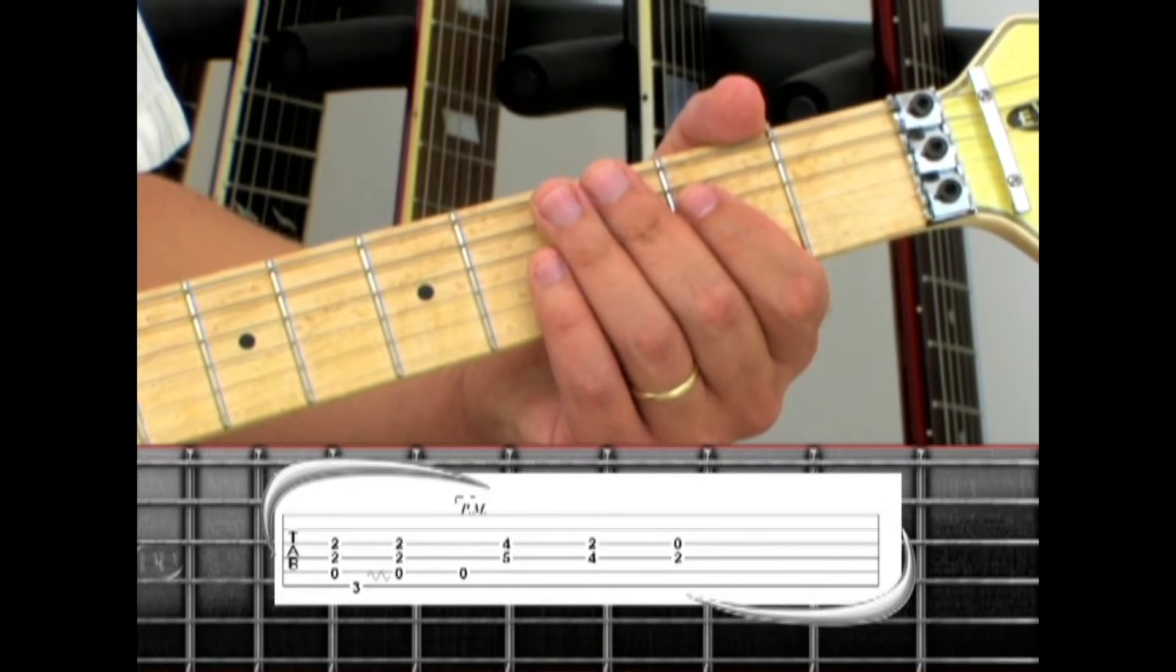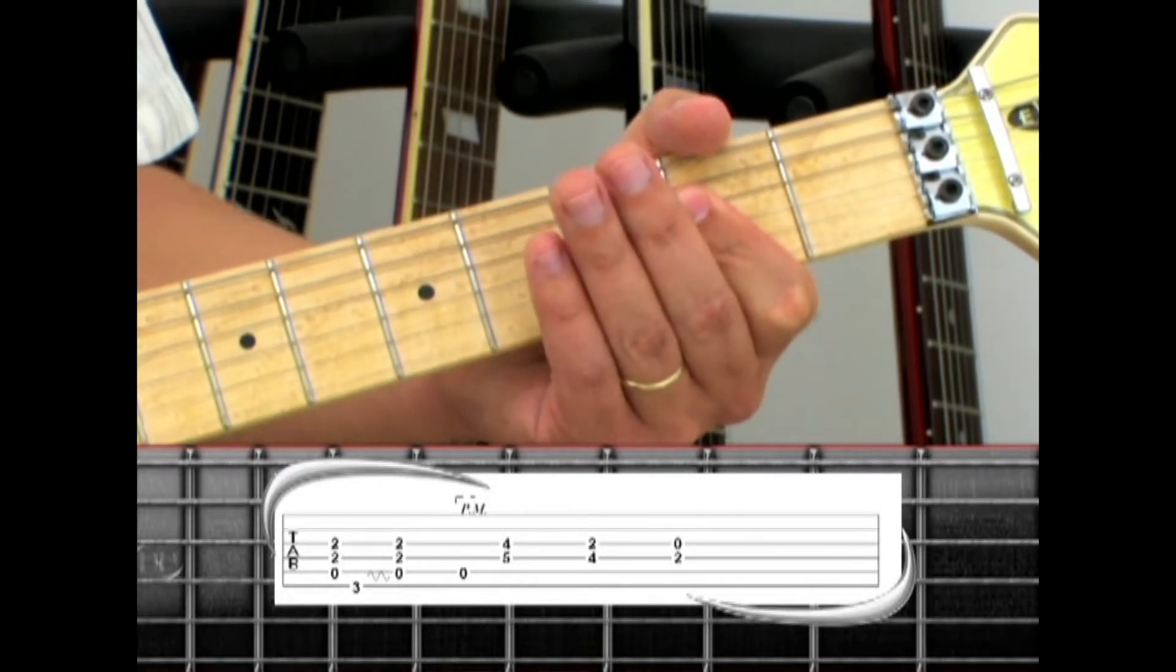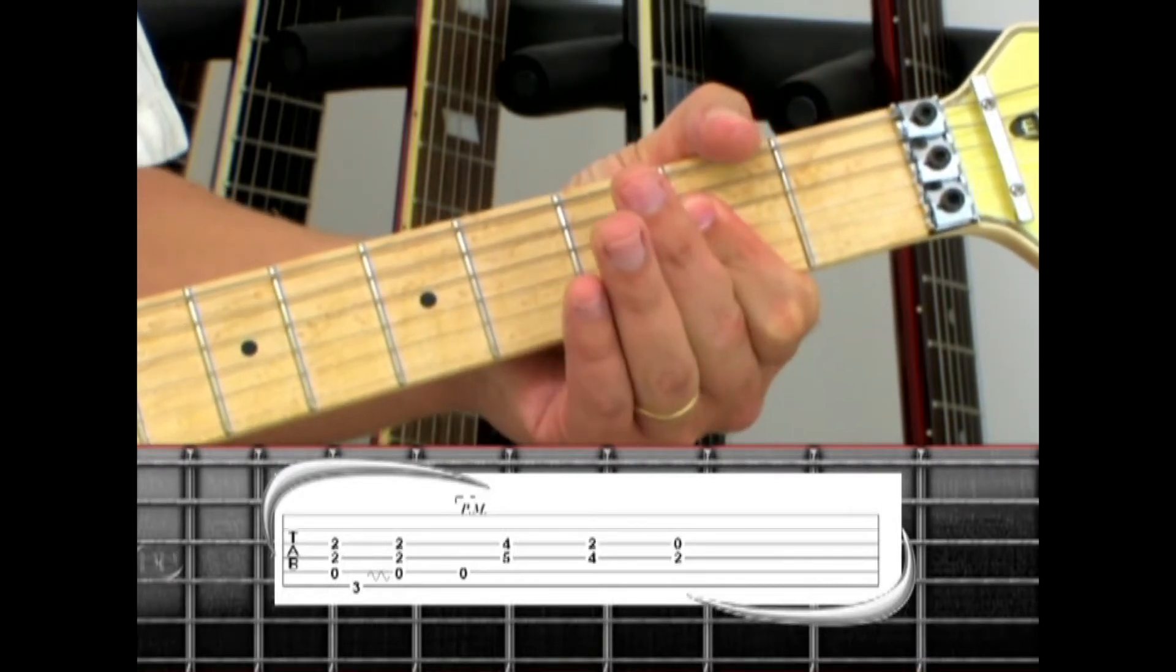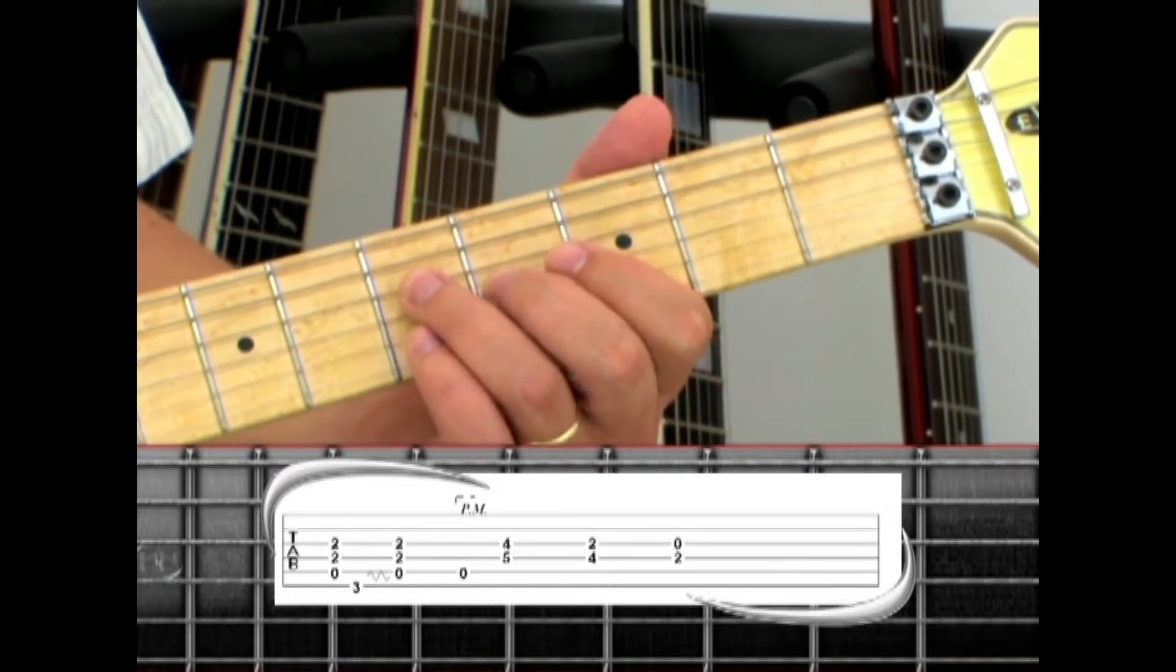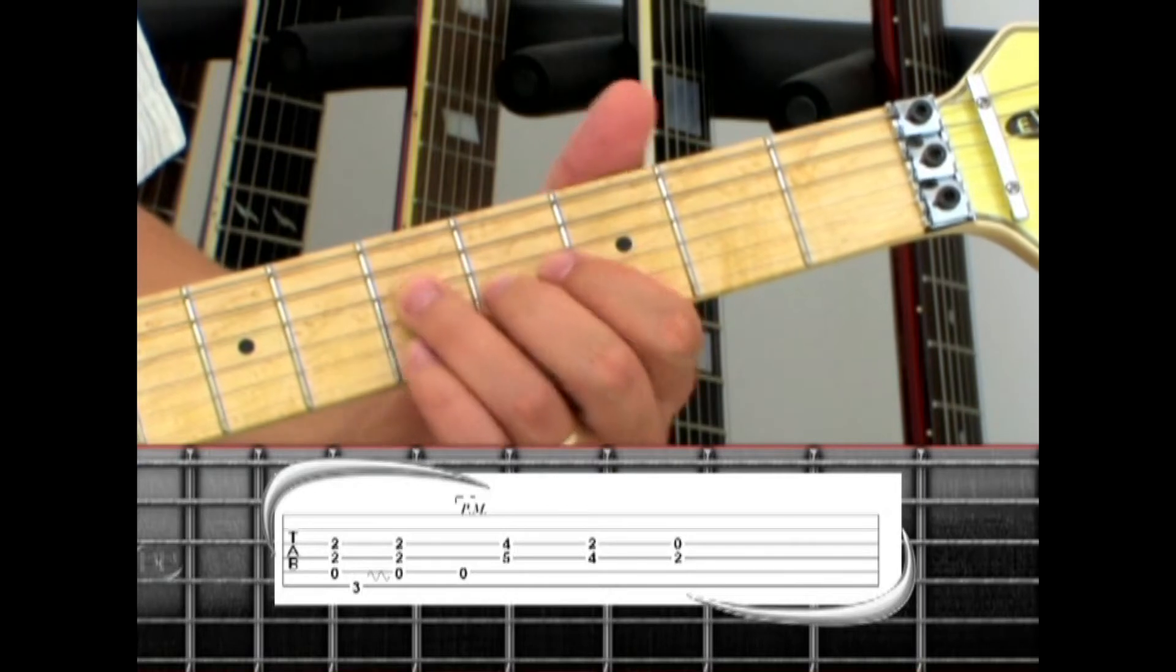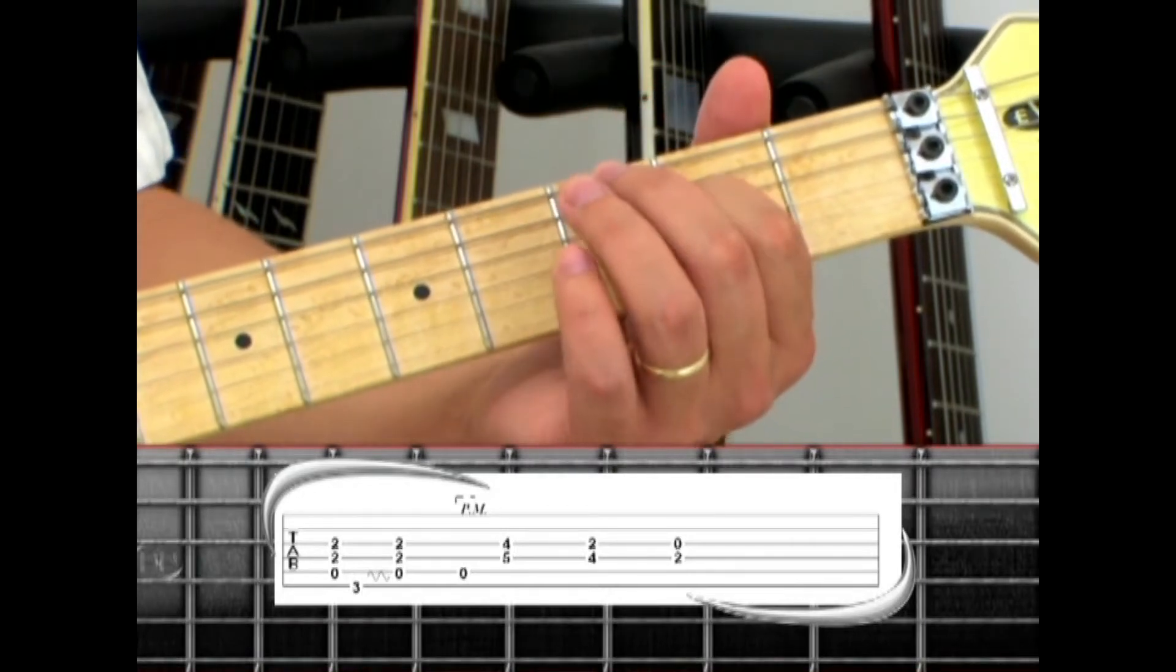So for the first part of the verse, we have A5, G, A5, a single palm muted A note, then a partial G, F sharp minor, E minor.